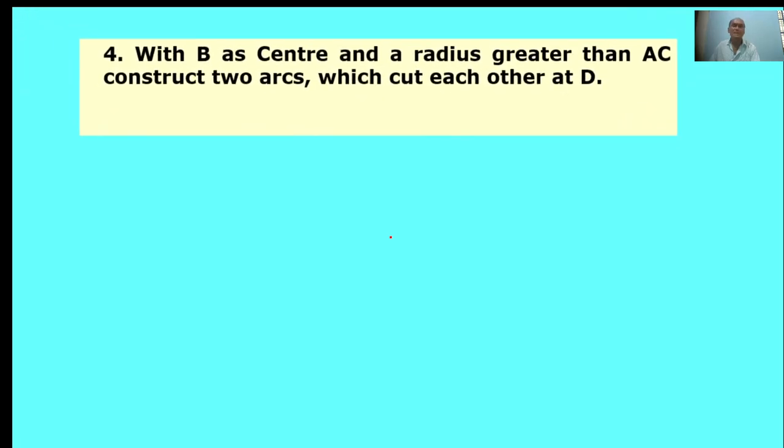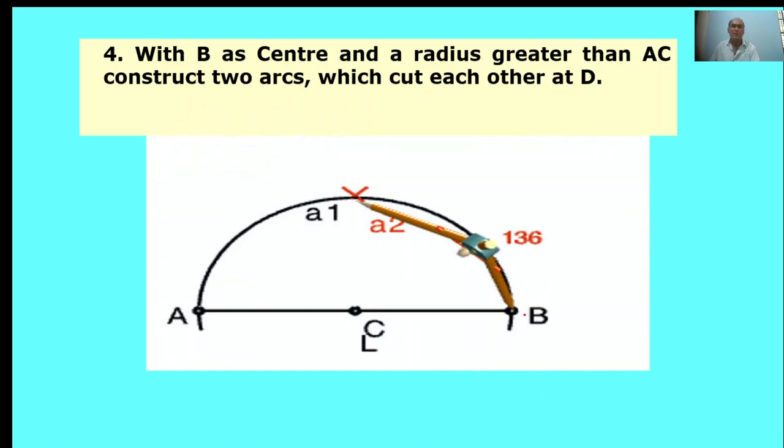With B as center and radius greater than AC, construct two arcs which cut each other at D. Here, B is the center point. Take the same radius, draw one arc. This arc cuts the previous arc. The intersect point is D. This is called point D.